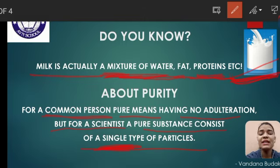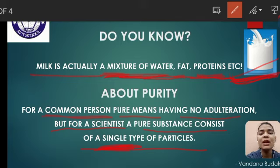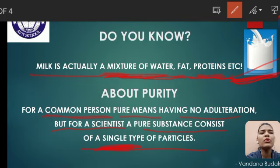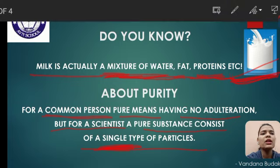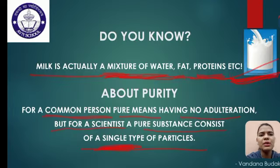Single type के particles के लिए example देती हूँ — जैसे आपके जो elements होते हैं, जैसे gold हो गया, silver हो गया, तो बच्चों ये क्या होते हैं? आपके same kind of particles से मिलकर बने होते हैं, इसलिए हम उनको pure कहते हैं. So this is your introductory lecture — we will be discussing more and more about the chapter in your next video lectures. बाद में हम और भी ज़्यादा discussion करेंगे. This is all about the introduction of this chapter.